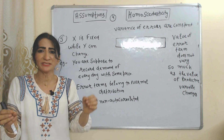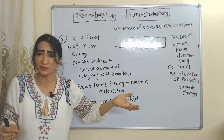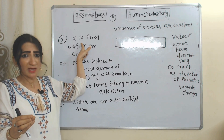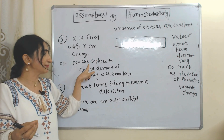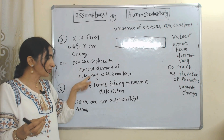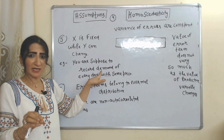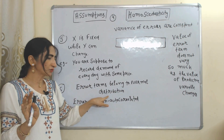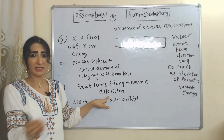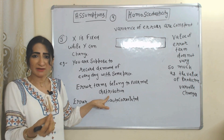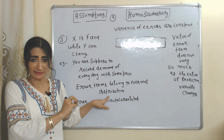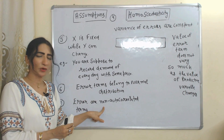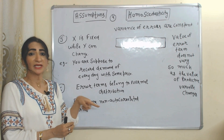Next assumption is homoscedasticity, which means the variance of error terms is constant. Error terms will not vary much as the value of the predictor variable changes. We also assume the independent variable x is fixed while the dependent variable y can change. For example, recording demand every day at the same price — demand is changing while price is constant. Additionally, error terms belong to a normal distribution, where mean is zero and variance is constant.